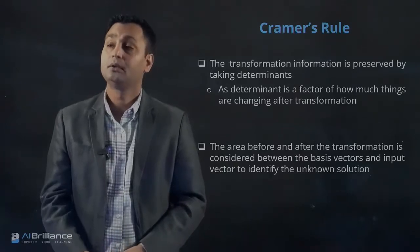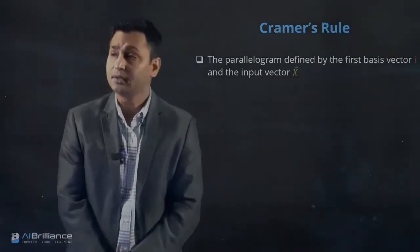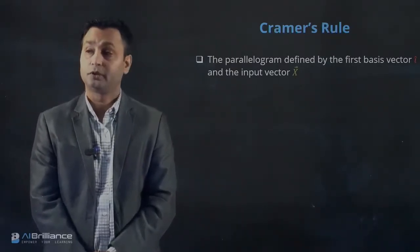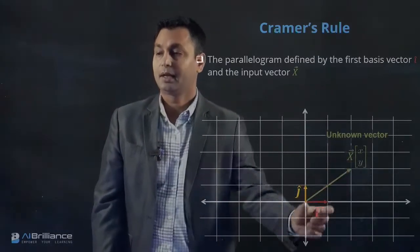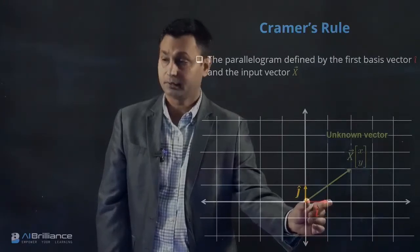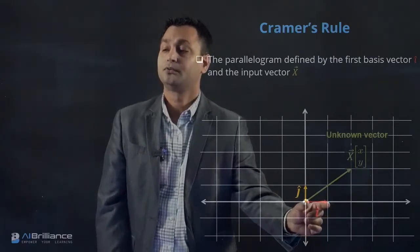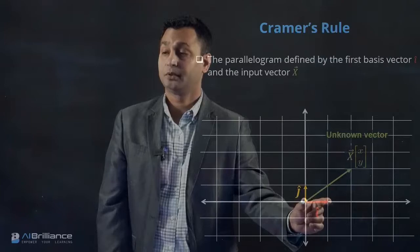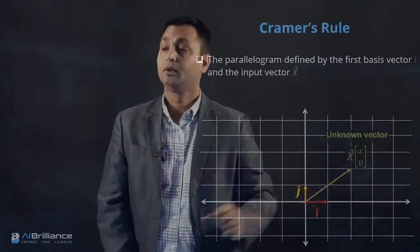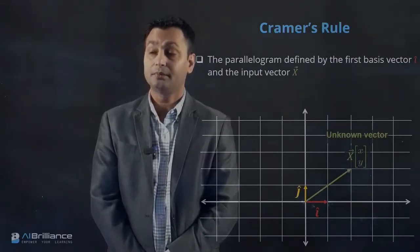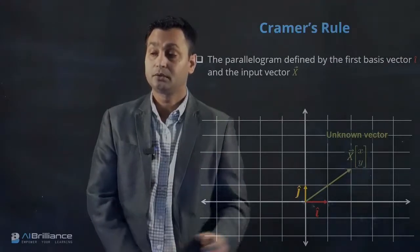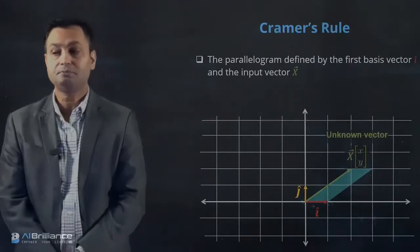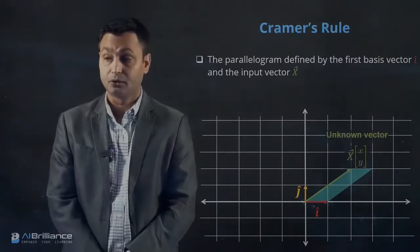Let's see intuitively what happens. First, consider the parallelogram defined by the first basis vector I and the input vector X. Since this is a two-dimensional problem, we have two basis vectors I and J. This I is the first basis vector, and X is the unknown vector. The parallelogram constructed using I-hat and the unknown vector X is shown here.